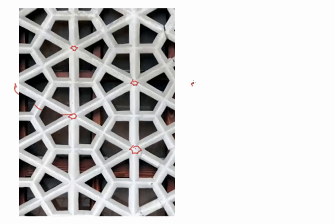I'm going to draw the unit cell off to the side. There's a six-fold rotation here and a six-fold rotation over here. So that's one set of rotation axes.